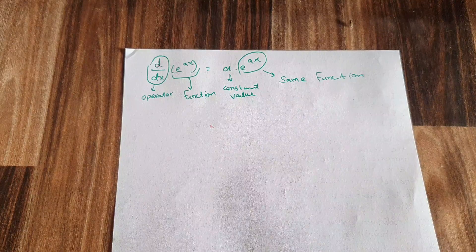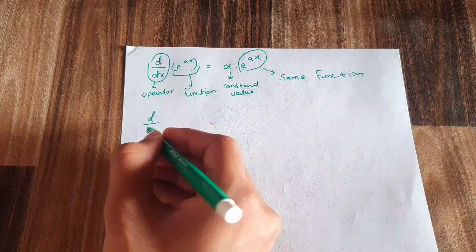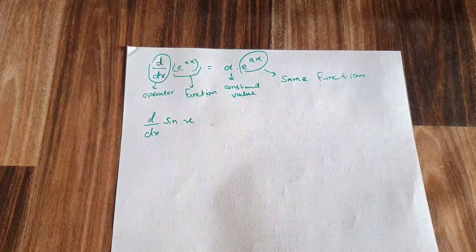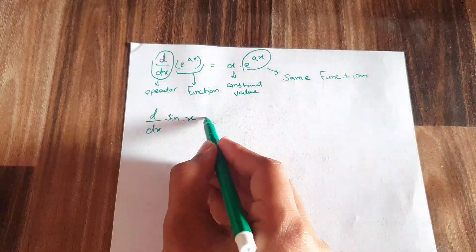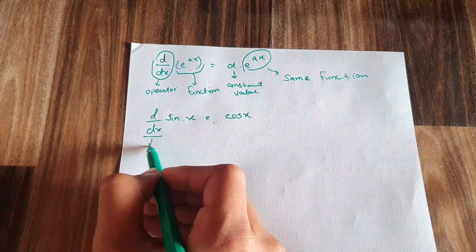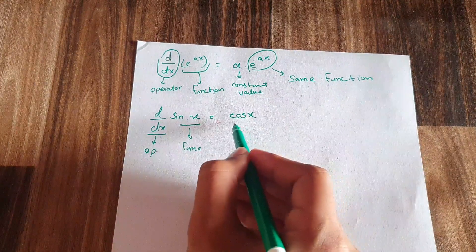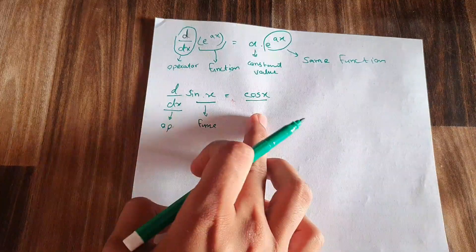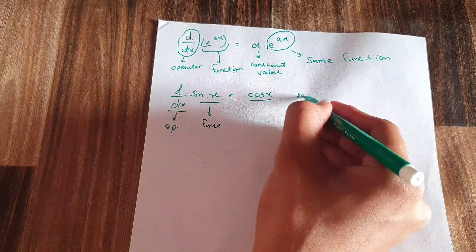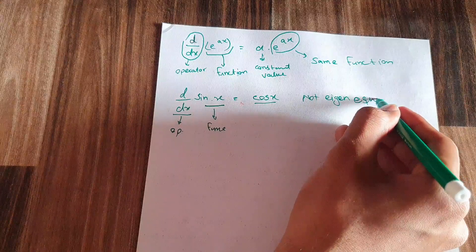Taking another example: d/dx · sin(x). The derivative of sin is not sin but cos. So here the operator is d/dx, sin(x) is the function, but the result cos(x) is a different function from the left hand side. Since the answer has changed, this is not an eigenequation.